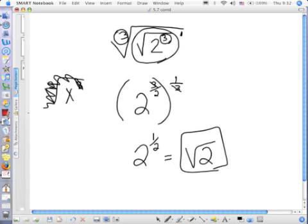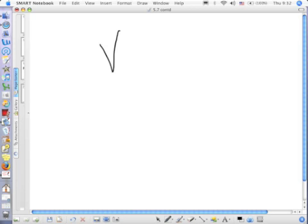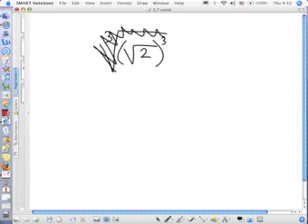So if we're taking the cubed root of the square root of 2 cubed, what happens? They undo each other. You simply get what's under there, the square root of 2. Isn't that what the answer was?